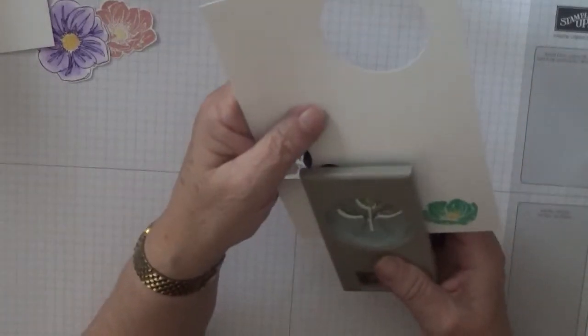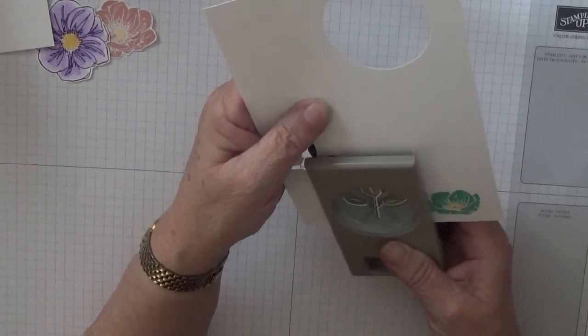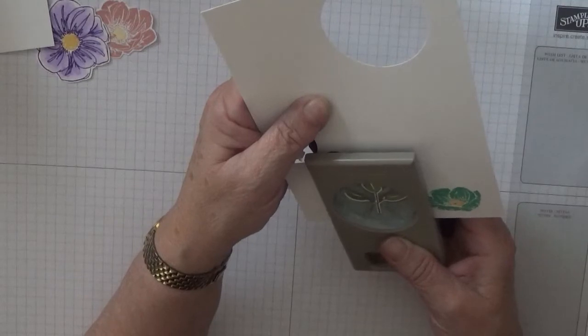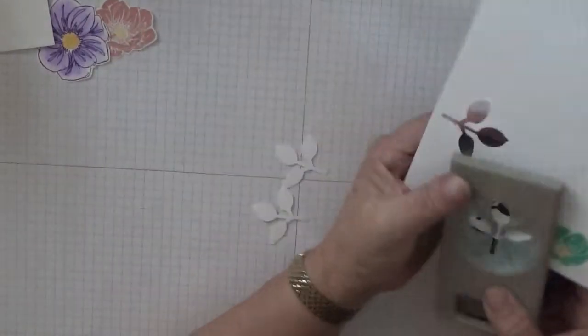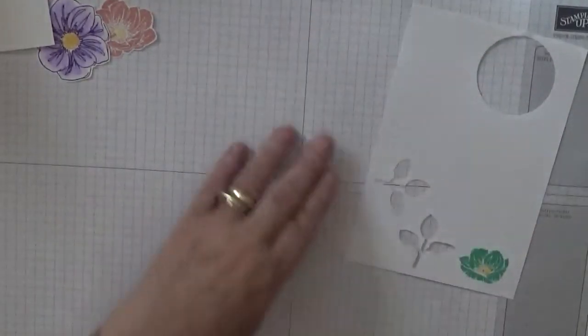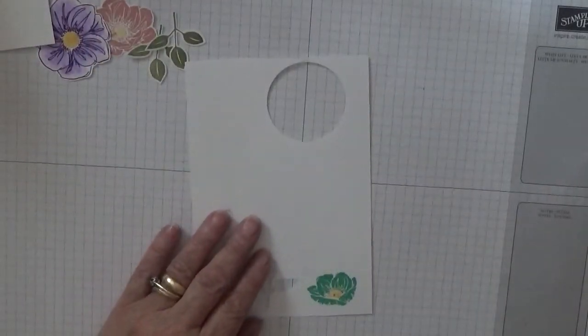This leaf punch is part of a Painted Harvest bundle, and it's nice that they've brought out another image which you can use it for instead of retiring it after one go.